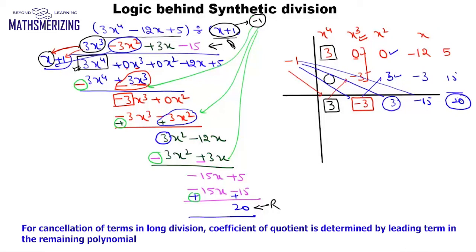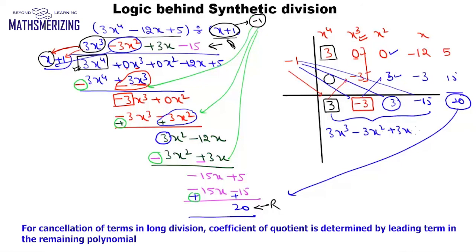So the remainder is 20 and 3x³ minus 3x² plus 3x minus 15 is your quotient. Every time we are eliminating a term with the leading coefficient, another term whose degree is just one less than the leading term is getting affected, and that is the reason we follow these steps.